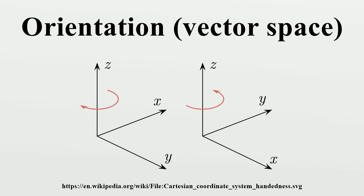In mathematics, orientation is a geometric notion that in two dimensions allows one to say when a cycle goes around clockwise or counterclockwise, and in three dimensions when a figure is left-handed or right-handed.